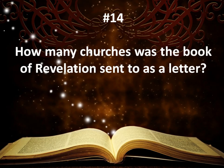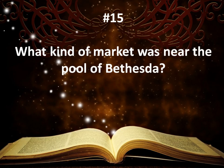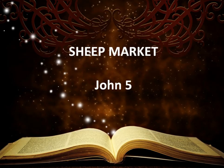Number fourteen: How many churches was the book of Revelation sent to as a letter? The answer is seven, and they are recorded in Revelation chapters 2 and 3. And our last question: What kind of market was near the pool of Bethesda? Our answer is a sheep market, in John chapter 5.